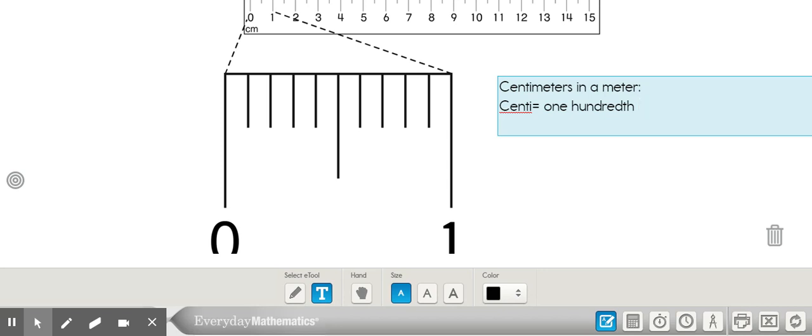As we think about the meaning of the prefix in centimeters, a centimeter is one hundredth of a meter. As we think about how many centimeters are in a meter, you'll find that a hundred centimeters equals one meter.